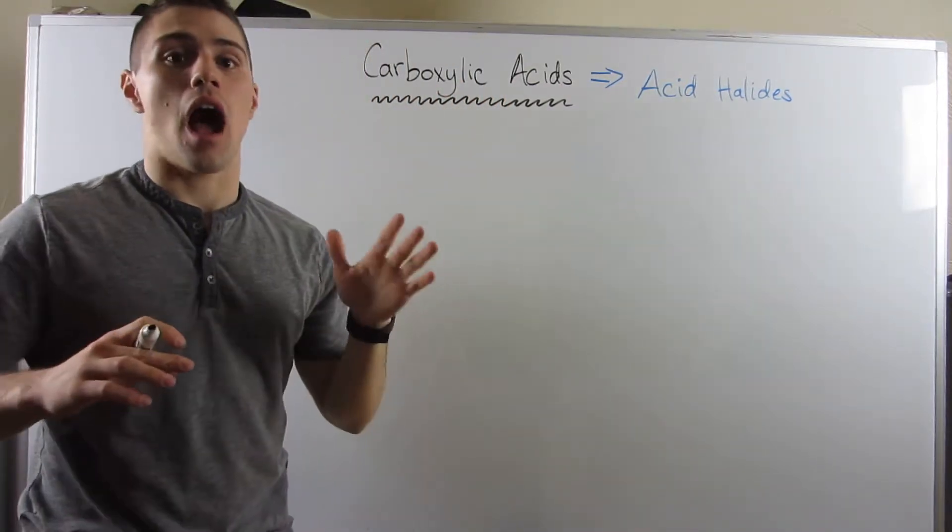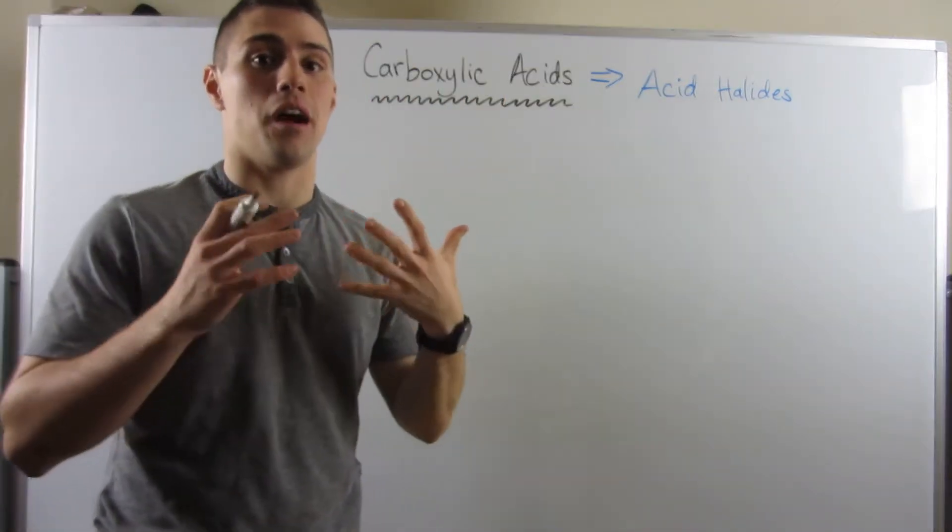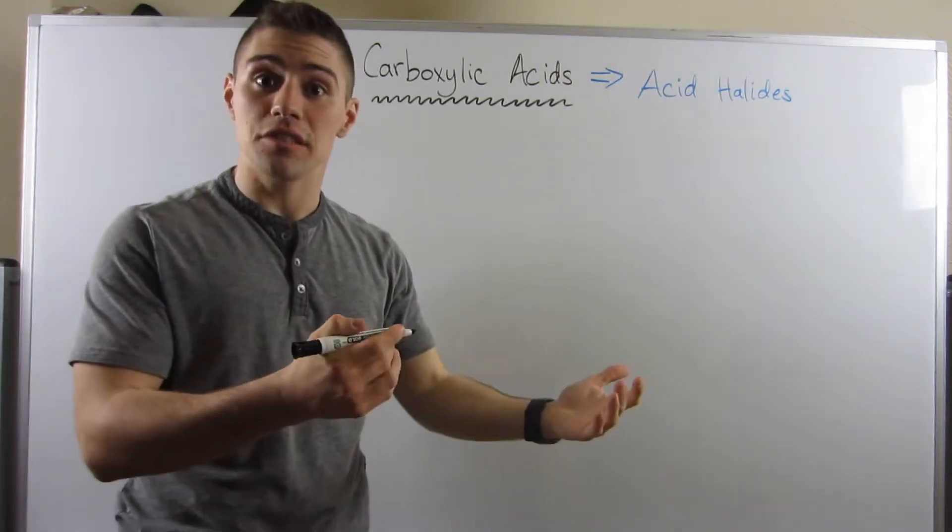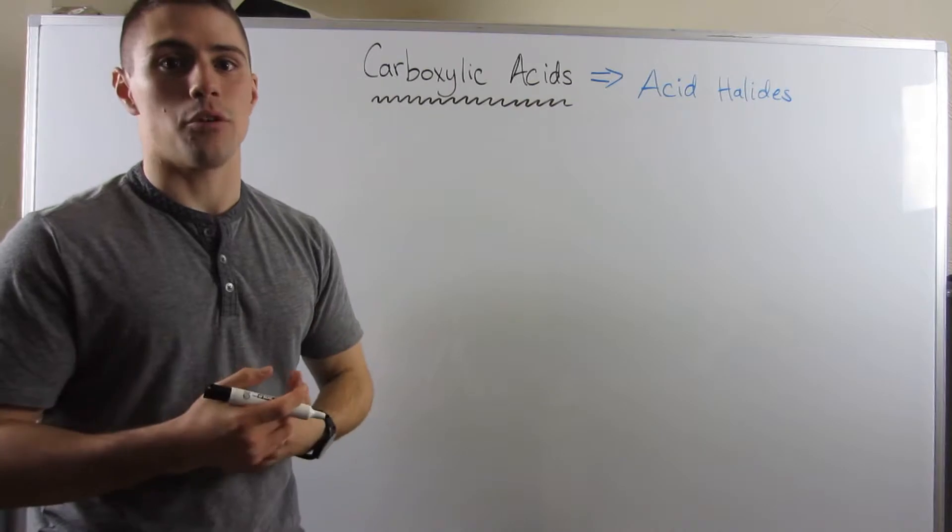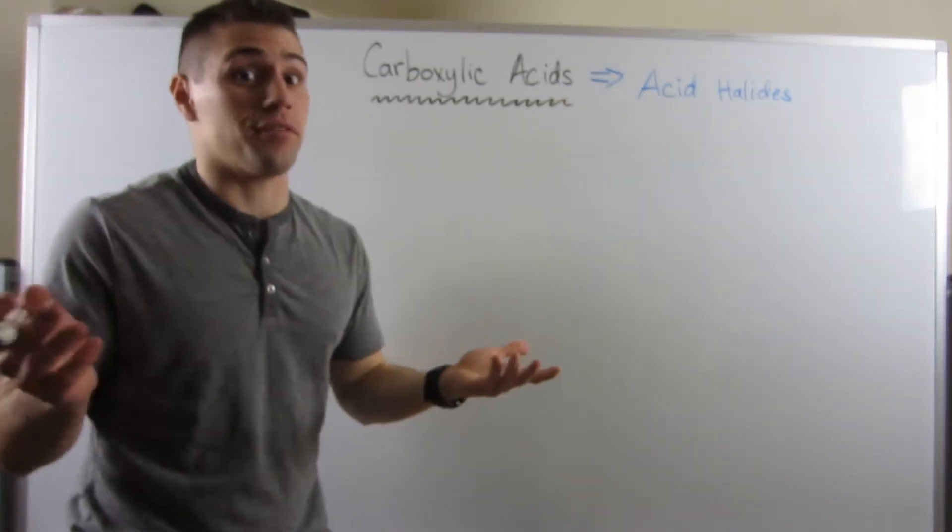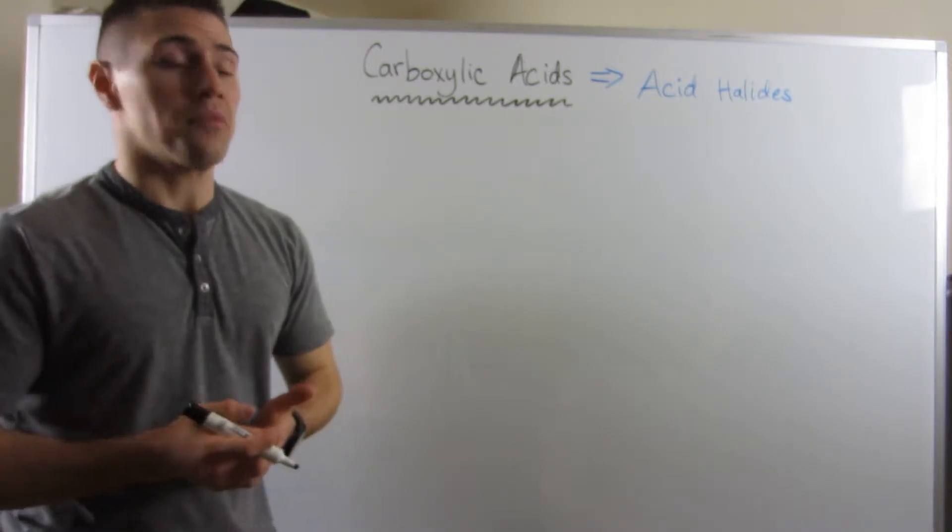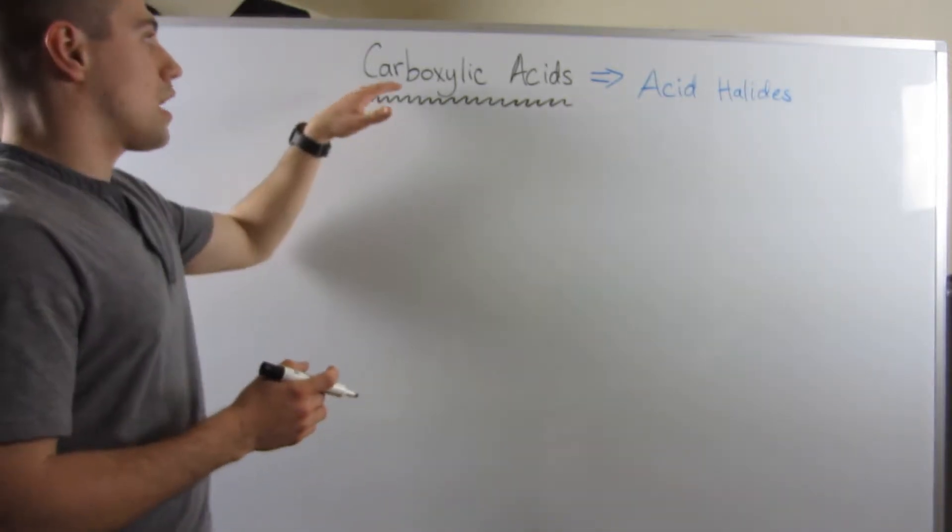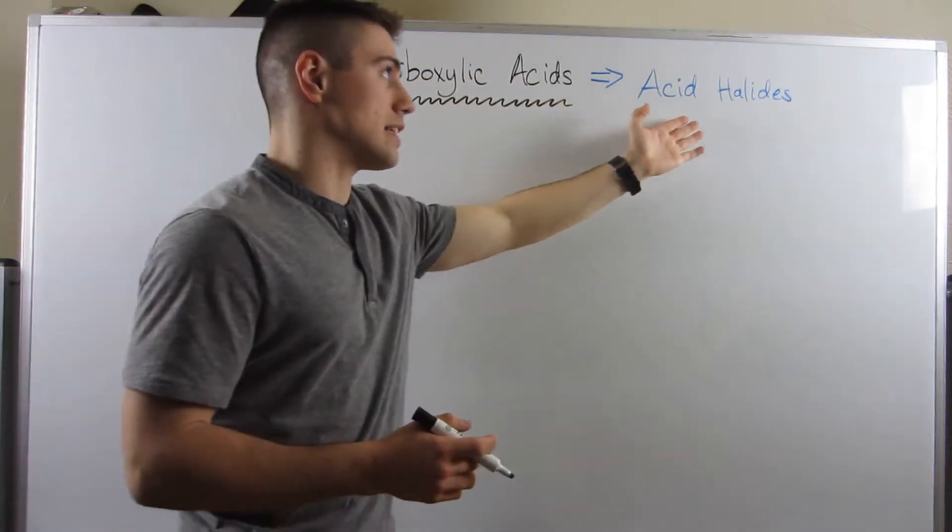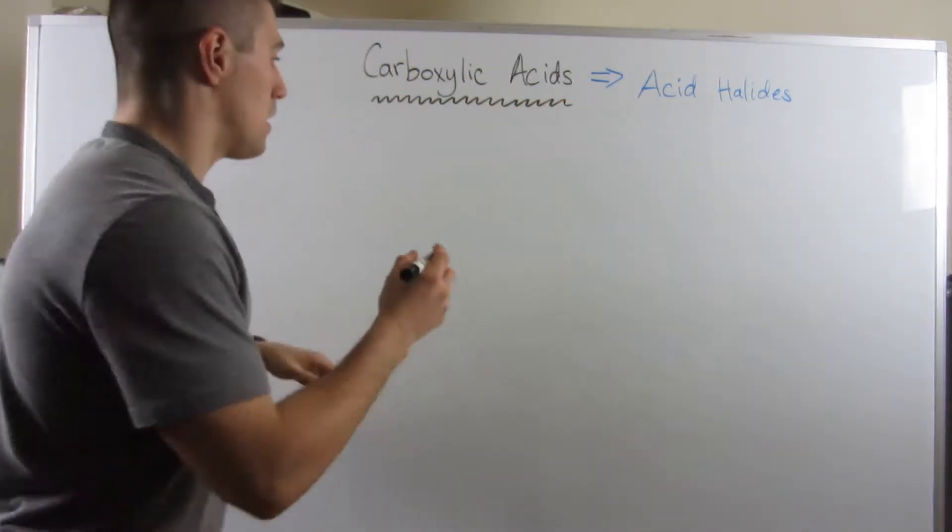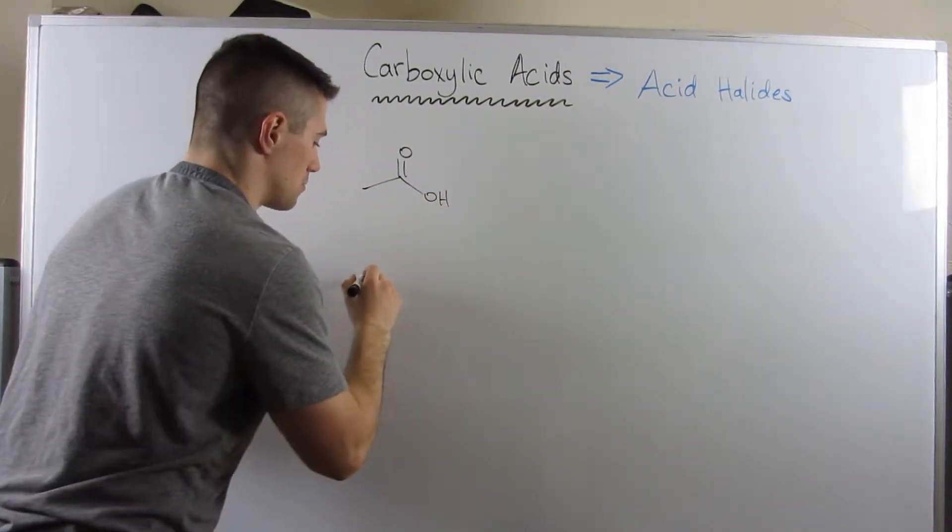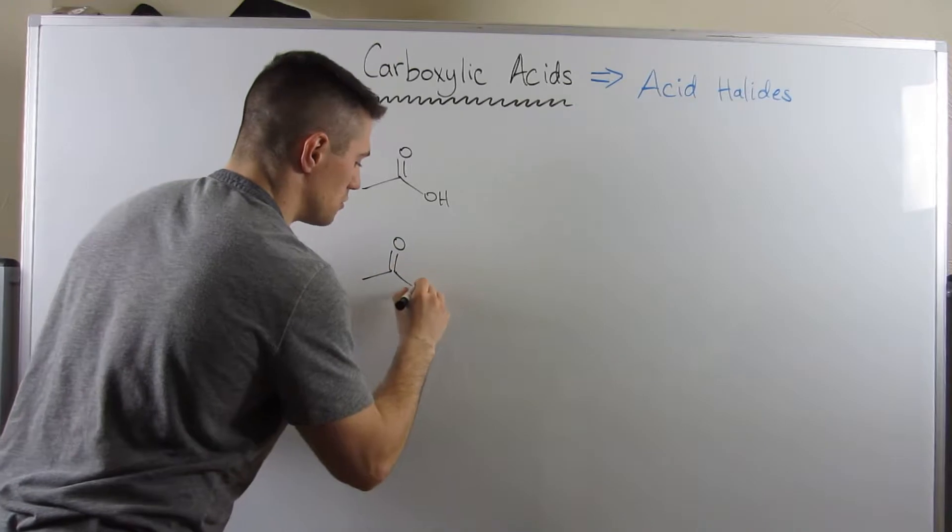And don't worry, you'll see that this is a very pattern-heavy type of reaction sequence and honestly it'll be one of the more easy and honestly fun reactions that we do. So I want to show you guys first a reaction where we take a carboxylic acid and I'll show you what exactly an acid halide is. I'm just going to use a generic two-carbon carboxylic acid and I'm just going to show you two reactions you can use.